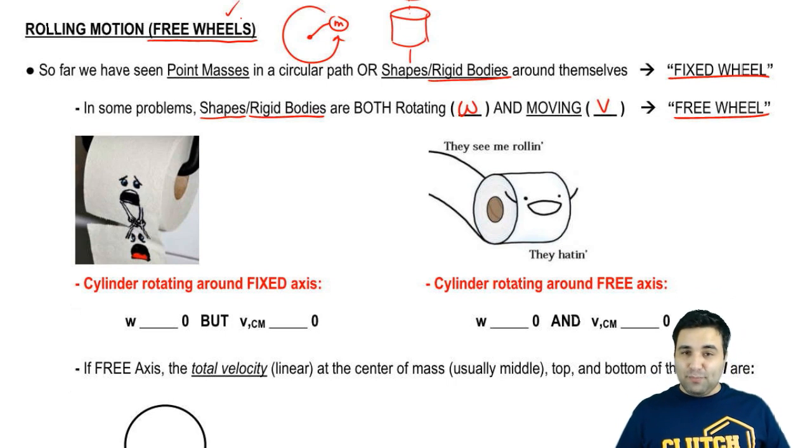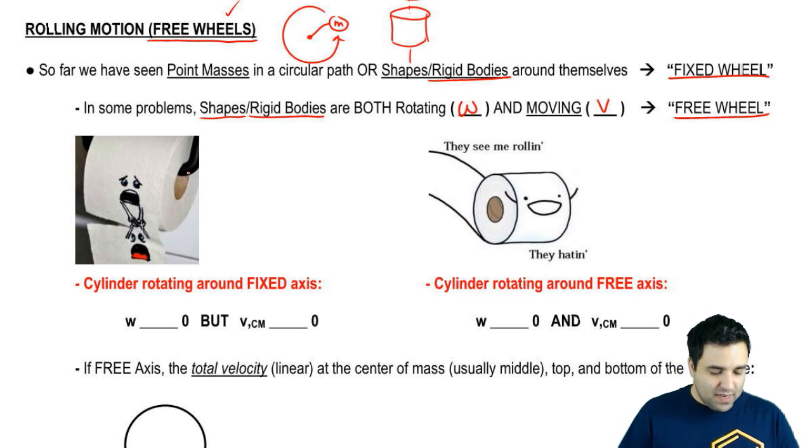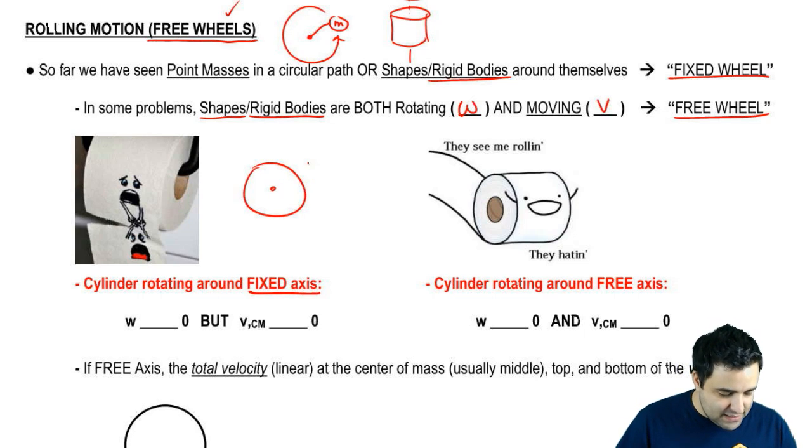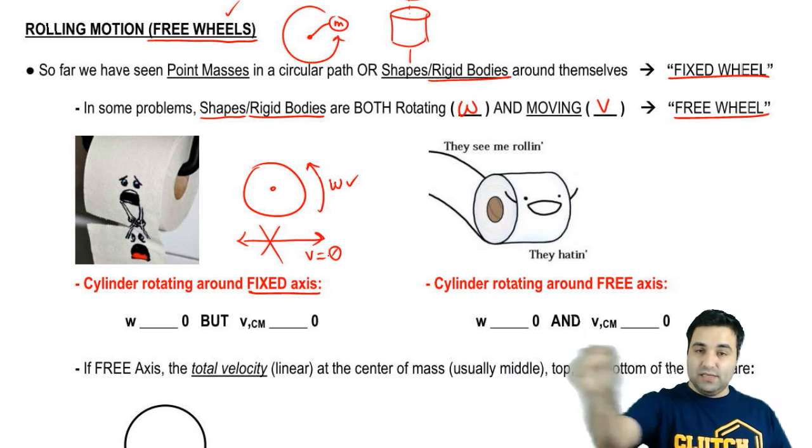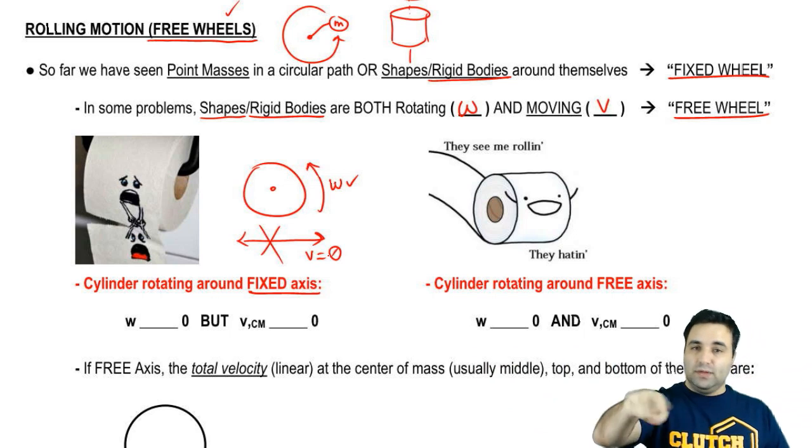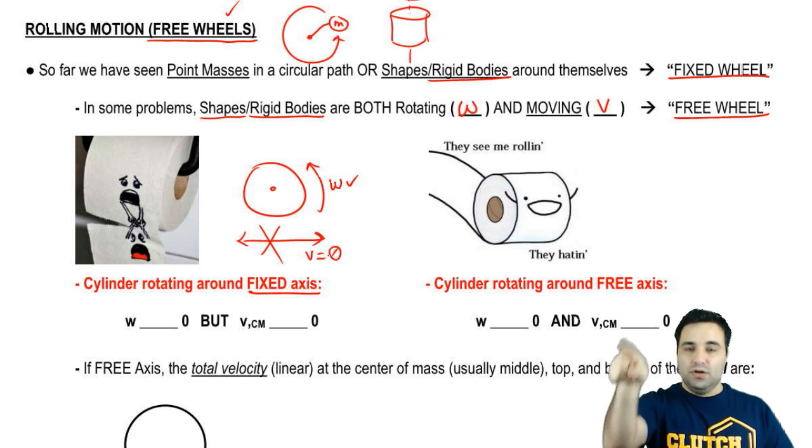And the best example, I think the most memorable example I can give you is actually rolls of toilet paper. So if you have a roll of toilet paper that's fixed in place as it normally is, this is a fixed axis. So here's the roll, and it can spin. It has a W, but it doesn't move sideways. So it doesn't move sideways. I'm going to do a no, which means V equals zero. V is when you actually move sideways. If you spin in place, you're not actually moving.